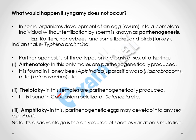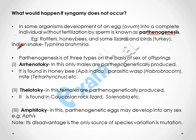Now what would happen if syngamy does not occur? In some cases there is no introduction of male gamete. The development of an ovum or egg into a complete individual without any fertilization by sperm is known as parthenogenesis. Because no male gamete is required, the individual is a clone of the female organism. Examples include rotifers, honey bees, some lizards, turkeys, and Indian snakes.